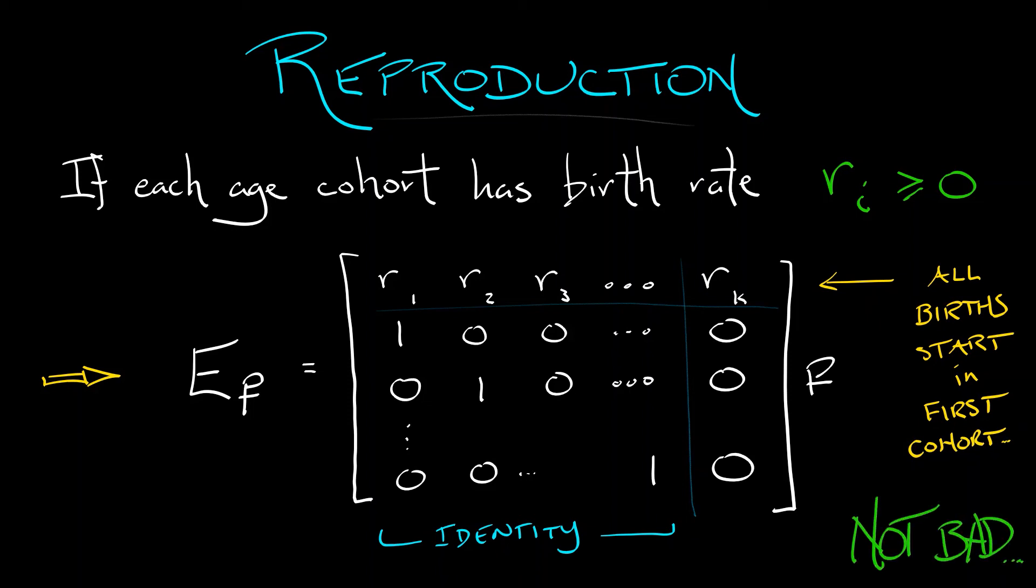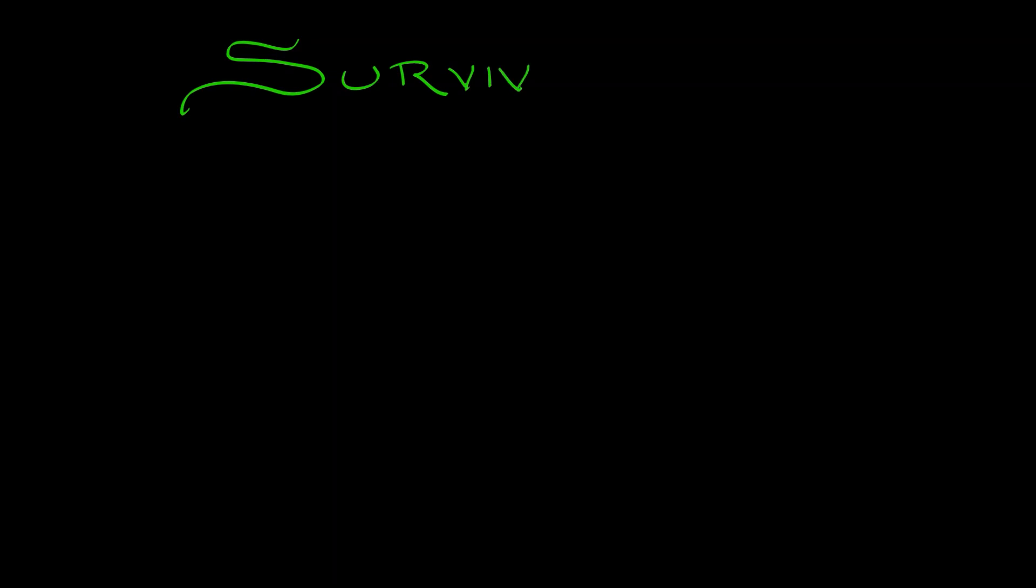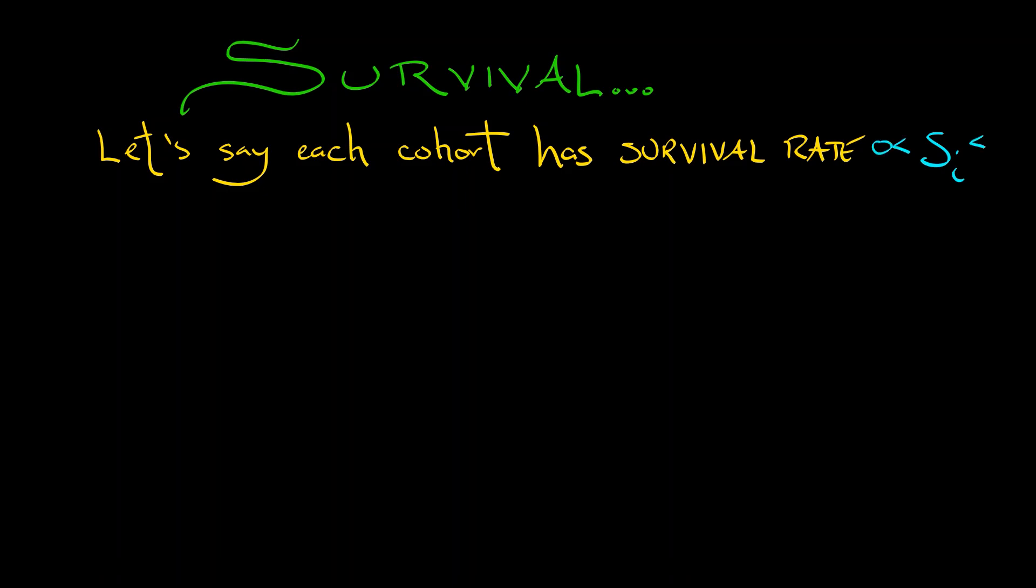As it stands, we've been assuming that each population cohort just automatically graduates to the next age. Of course, that does not always happen. So let's say that each cohort has a survival rate, S sub i, that is, let's say, between zero and less than or equal to one. But let's say that it's strictly positive.